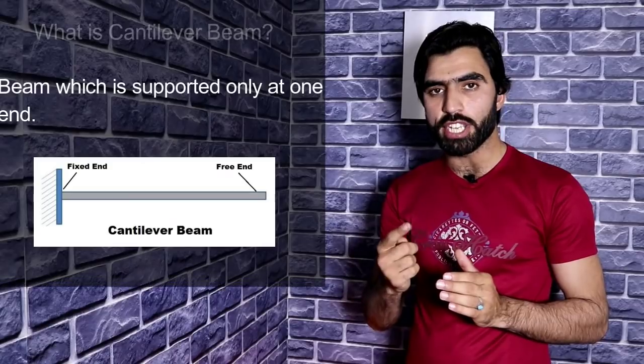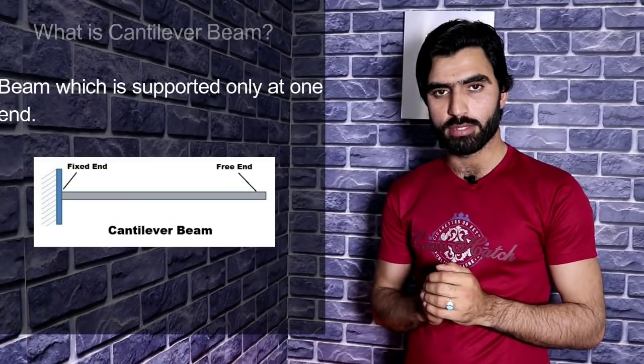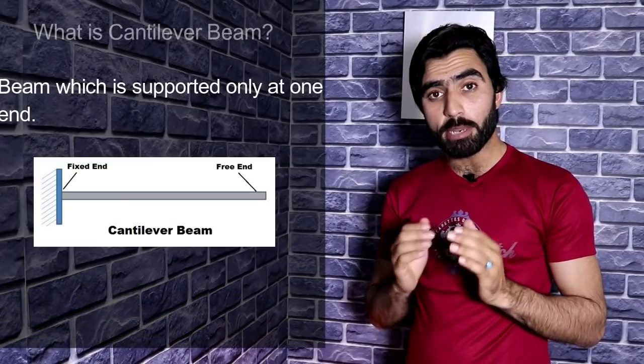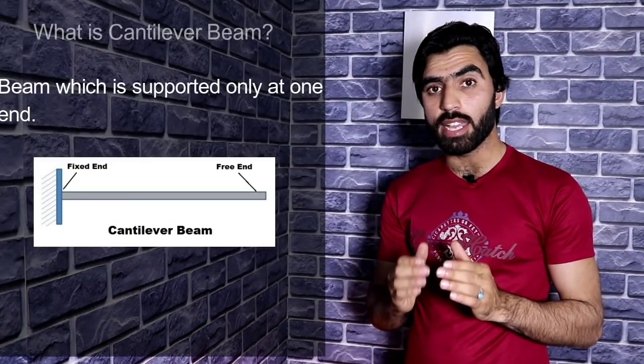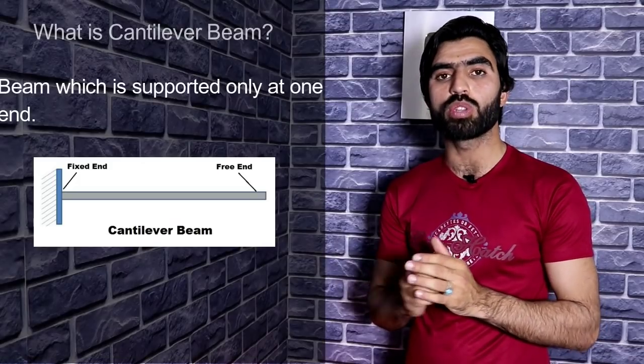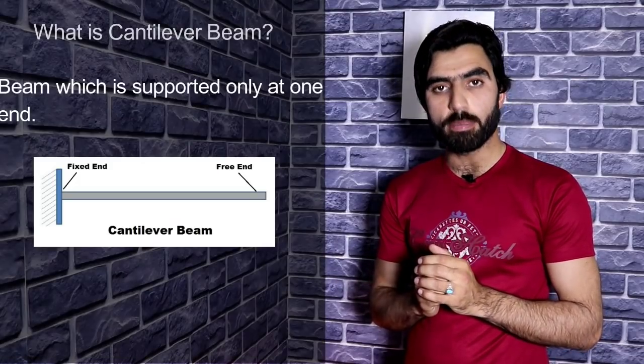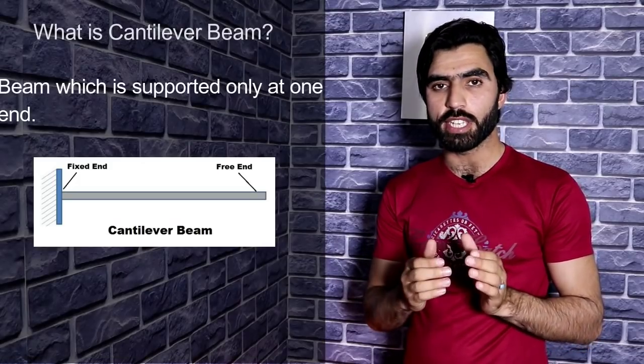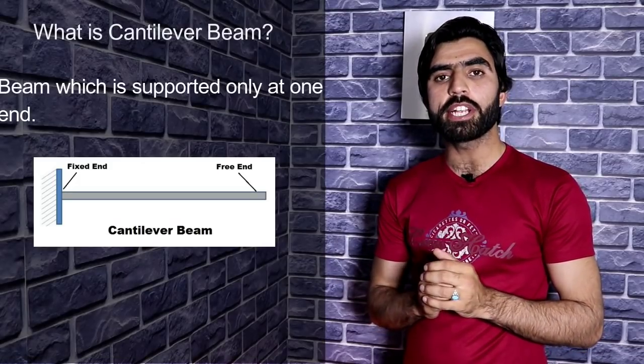First of all, what is a cantilever beam in civil engineering? A beam which is supported only at one end is called a cantilever beam. Cantilever beam transfers the load to the support at the fixed end, where it manages the moment force and also shear stresses.